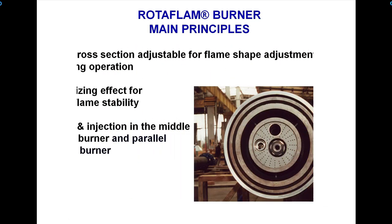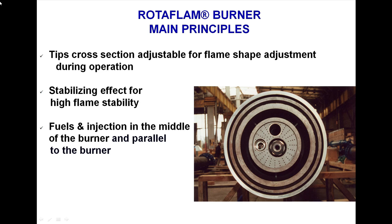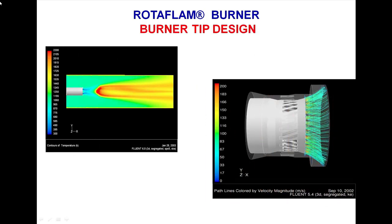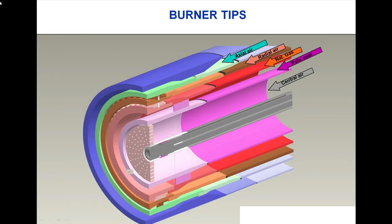Adjusting device — burner main principle. The tip cross-section is adjustable for flame shape adjustment during operation, providing a stabilizing effect for high flame stability. Fuels are injected in the middle of the burner and parallel to the burner axis. The burner tip design controls how air will flow, as shown by the arrow marks: axial air, radial air, natural gas, pulverized coal, and central air.